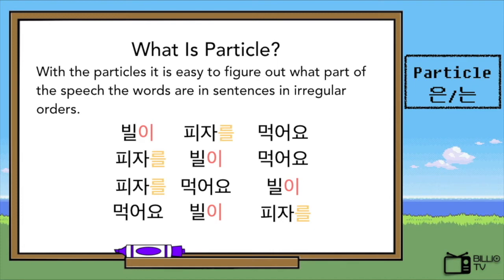The meaning of the sentence is not changed, but normally the first part of the sentence is emphasized. The second sentence, 피자를 빌리 먹어요, can also be used in conversation. The third one, 피자를 먹어요, 빌리, might be used in lyrics of a song — for example, 피자를 먹어요, 빌리! Like this.